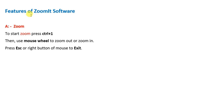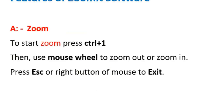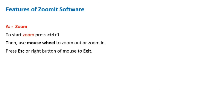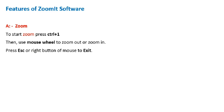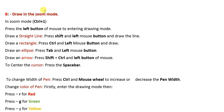These are some basic features of ZoomIt software. The number one feature is obviously zoom. In order to enter zoom mode, just press Ctrl+1 — you are now in zoom mode. Then use the mouse wheel to zoom in or zoom out of the screen. To exit at any time, press the Escape key or the right mouse button.